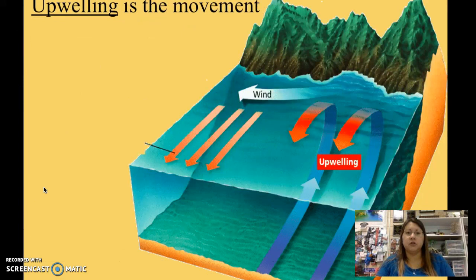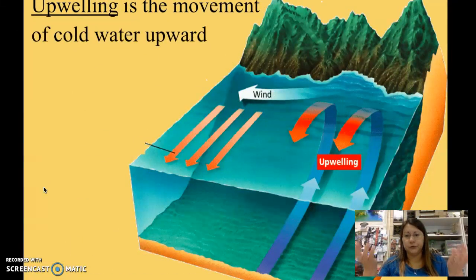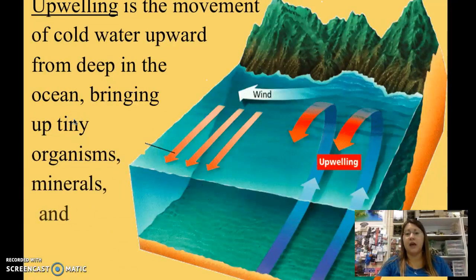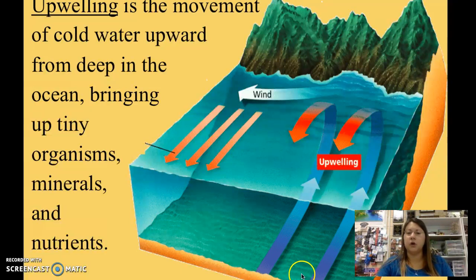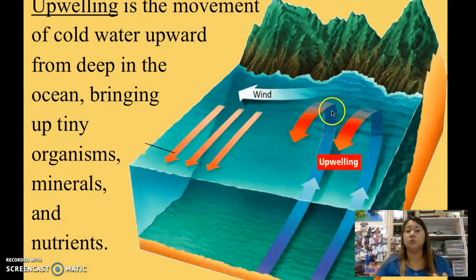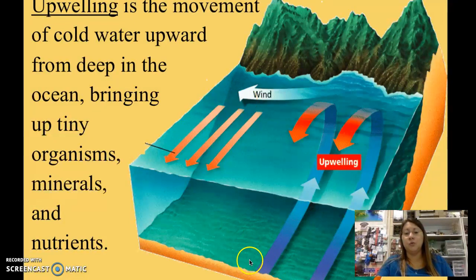Upwelling is another term you need to be familiar with. The 'up' refers to upward — upwelling is cold water that moves upward, bringing with it a lot of nutrients and minerals that fish can eat. Cold water is more dense, so it moves upward when wind pushes the warmer surface water out of the way, allowing the cold water from deep in the ocean to rise up and replace it.